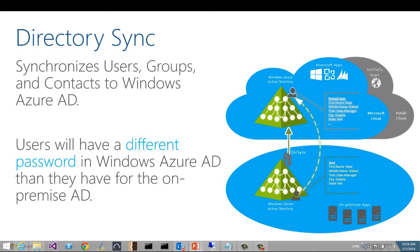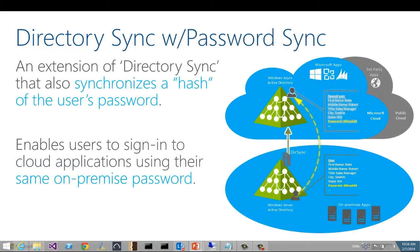If you have Server 2012 R2 deployed, then this scenario will also synchronize devices. The next scenario is called directory sync with password sync, and this is simply an extension of directory sync that also synchronizes a hash of the user's password to Windows Azure AD. So this enables users to sign in to cloud applications using their same on-premise password. It's important to note that this is not single sign-on. Even though a user may already be authenticated on-premise through the on-premise AD in Kerberos, the user will still be challenged for credentials when accessing cloud applications through Azure AD. The credentials will be the same, but they will have to re-enter them. Some people call this similar sign-on because at least the same password is used even though the user is challenged to enter it.